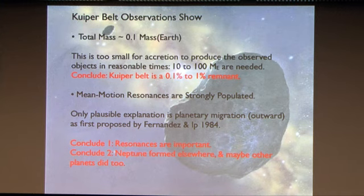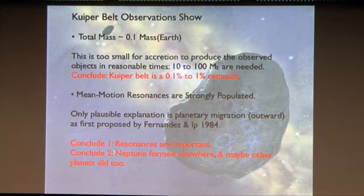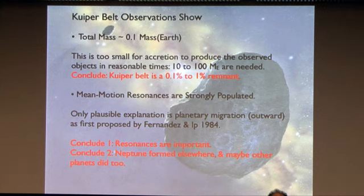The mean motion resonances were a big surprise — they were not expected. The only model that has survived for populating the resonances is one in which Neptune migrates: the planet's orbit expands with time, and the mean motion resonances are swept through the Kuiper Belt, picking up objects as they pass. The heavily populated resonances provide evidence for past planetary migration in the solar system.